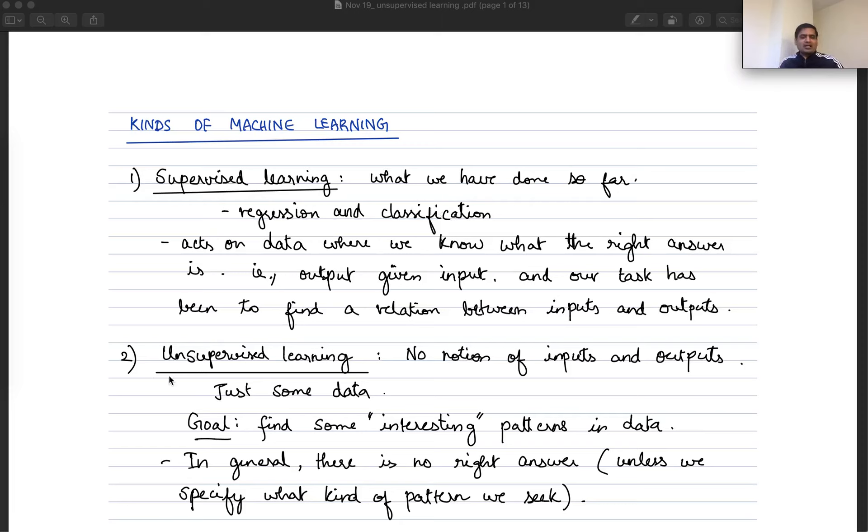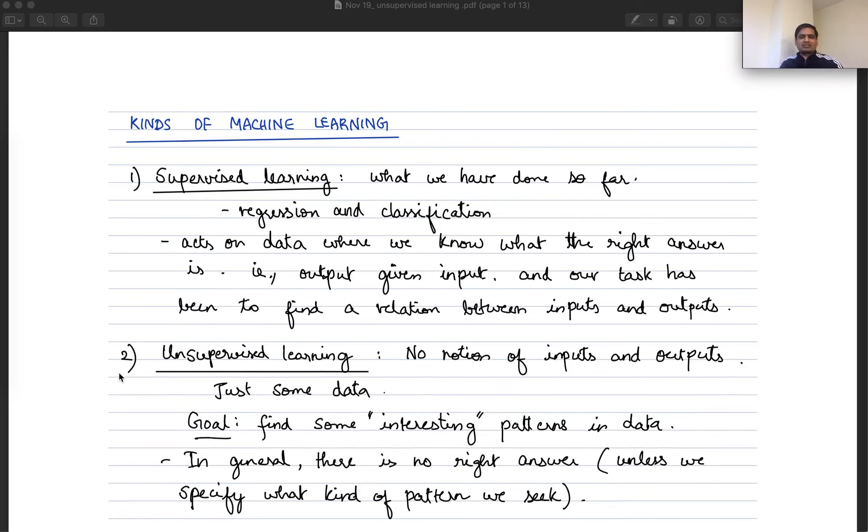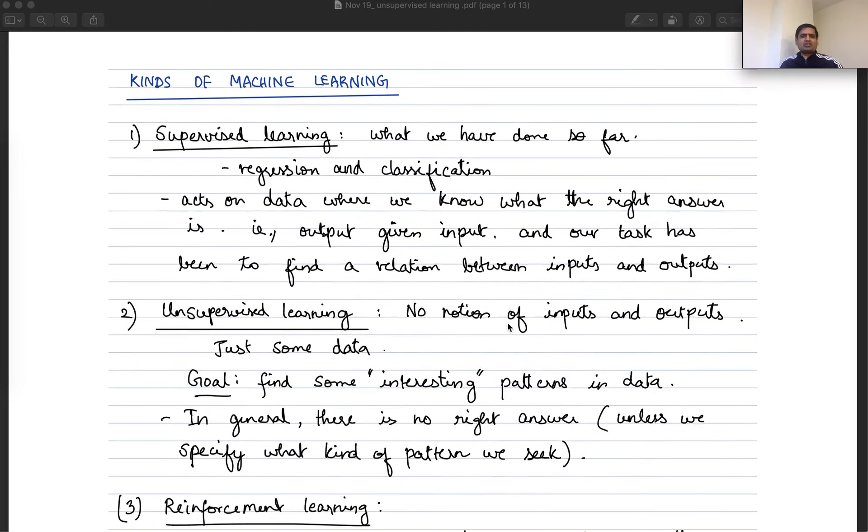And then there is unsupervised learning, which is what we're going to do today. There's no notion of inputs or outputs here, we just have some data. The goal is to find some interesting patterns in the data. Broadly speaking, because it is so vague, in general, there is no right answer unless we specifically specify what kind of patterns we are seeking.